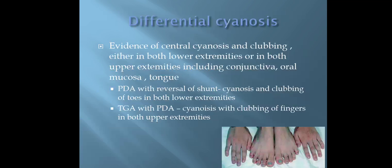The last type is differential cyanosis. There will be evidence of central cyanosis and clubbing either in both lower extremities or in both upper extremities, including conjunctiva, oral mucosa, and tongue. For example, in case of patent ductus arteriosus with reversal of shunt, there will be cyanosis and clubbing of toes in both lower extremities. And in transposition of great arteries with patent ductus arteriosus, there will be cyanosis with clubbing of fingers in both upper extremities.